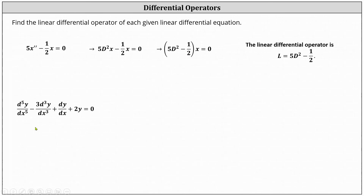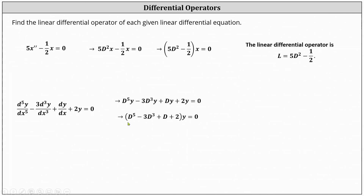For our second example, we can write the given differential equation using capital D notation as capital D to the fifth y minus three capital D to the third y plus capital D y plus two y equals zero. It appears as if we can factor out a common factor of y, which we can't, but we can still write this as capital D to the fifth minus three capital D cubed plus capital D plus two, applied to y equals zero. This indicates the linear differential operator is L equals capital D to the fifth minus three capital D cubed plus capital D plus two. I hope you found this helpful.